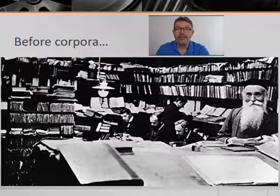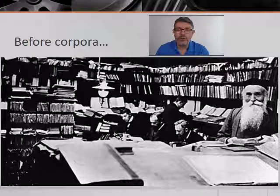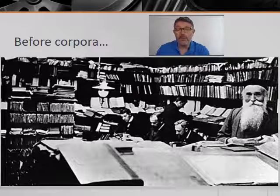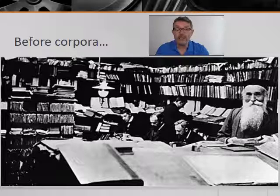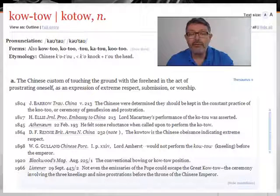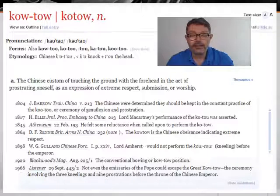The job takes decades to accomplish. Murray was employed in 1879 and the first edition of the OED was published in 1928, 13 years after Murray's death. The OED is a dictionary based on evidence from this physical corpus of books that have actually been read by editors, assistants, and volunteers. It is etymological in its organization.